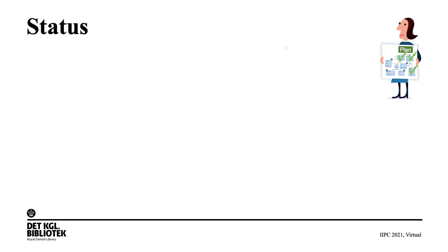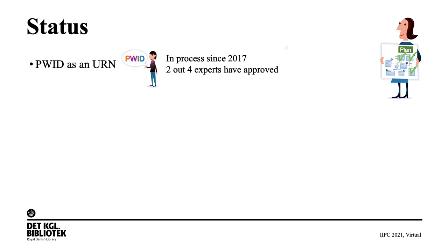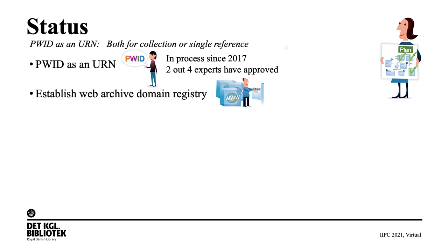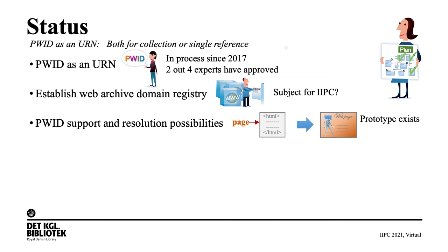The PUD has been proposed as a URN, with work ongoing since 2017. At this stage two of four experts have approved. PUD as a URN is designed for both collections and single references. Since PUD uses archive domains to identify web archives and we do not have any persistent reference to web archives, we are also looking into the possibility of establishing a web archive registry — which could for instance be a subject for IIPC. A prototype has been made that can resolve single PUDs from any archive, and this could be matured with involvement from IIPC and the Open Preservation Foundation.